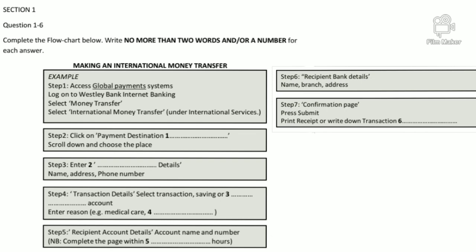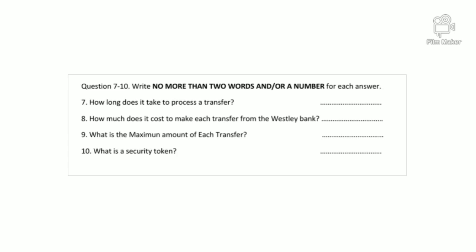If you haven't got a printer at home, just make a note of your transaction reference number. Before you hear the rest of the conversation you have some time to look at questions seven to ten.